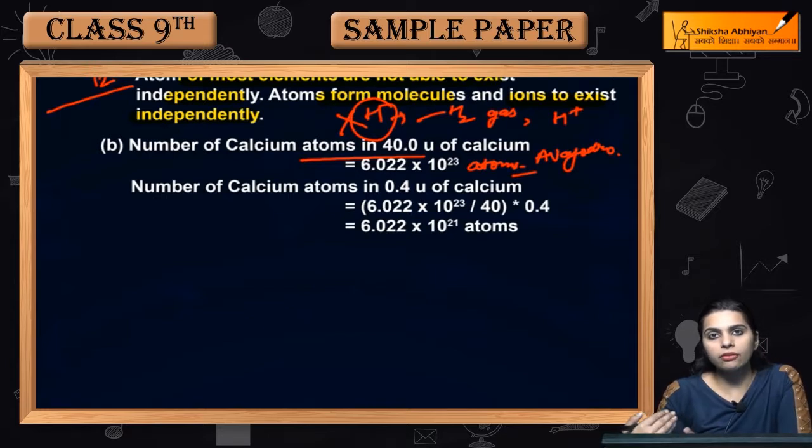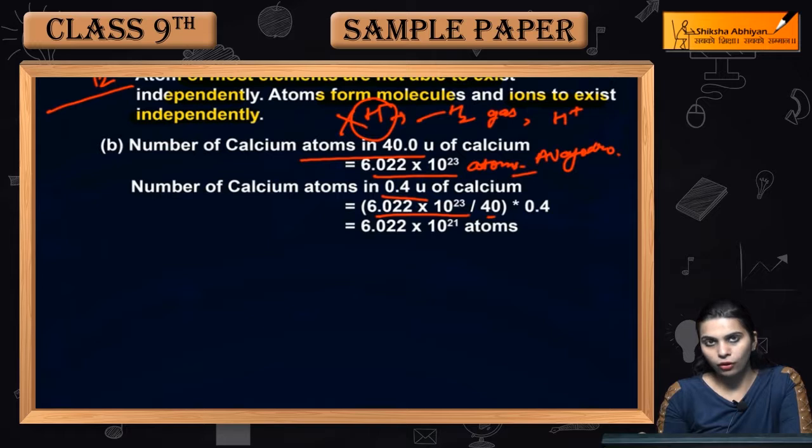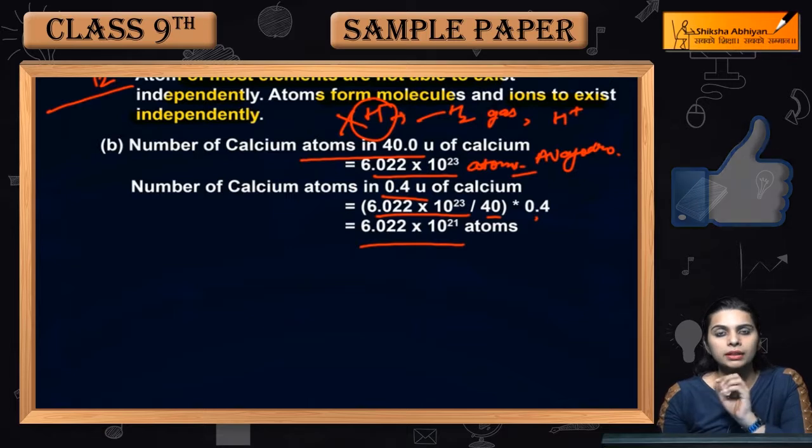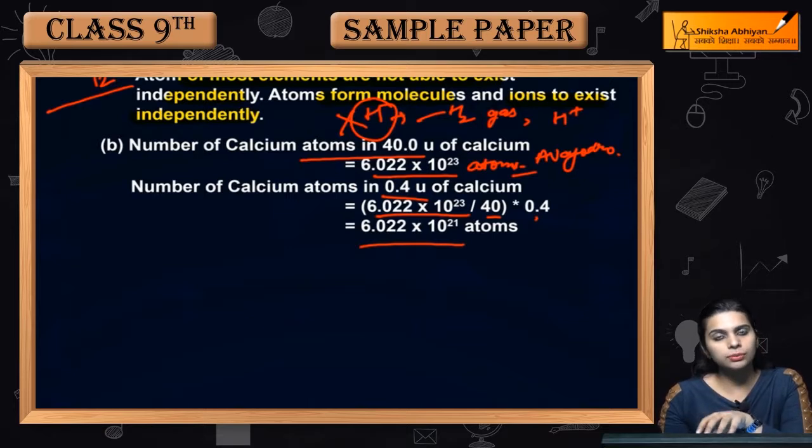So when in 40 grams of calcium, how many atoms are in 0.4? Avogadro divided by 40 into 0.4. So in our 0.4u of calcium, that means 0.4 grams, how many atoms are we? 6.022 into 10 raised to the power 21 atoms. Okay, take care. Thank you.